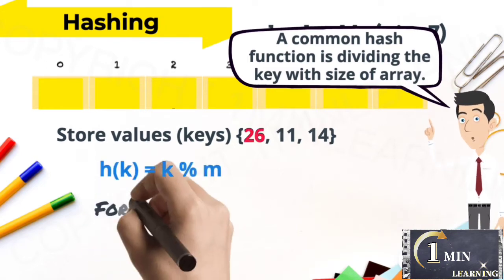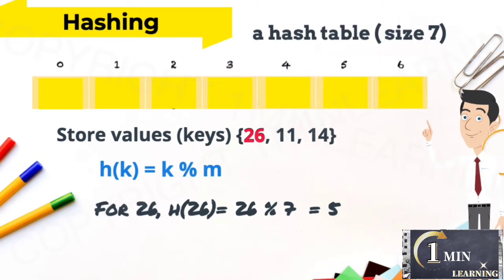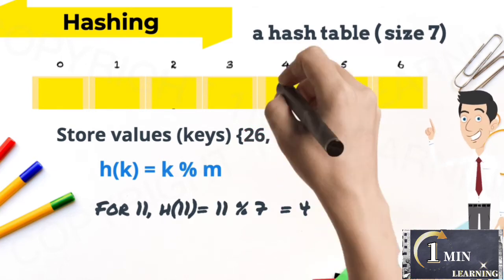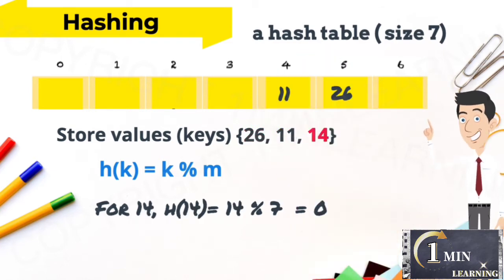First input data 26 returns the hash value of 5, so 26 is stored at index 5. 11 is stored in index 4. 14 is stored in index 0.